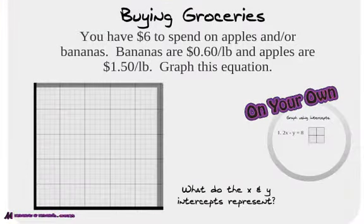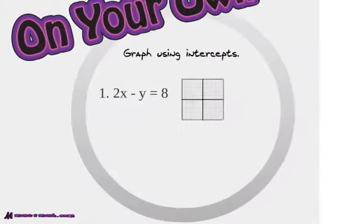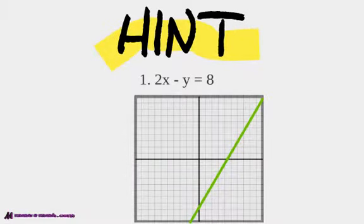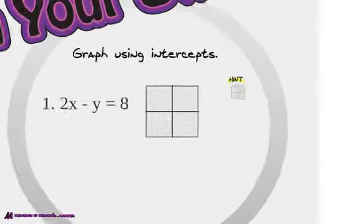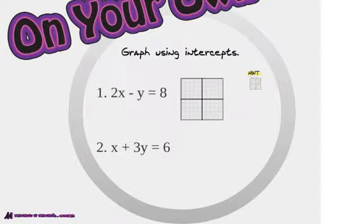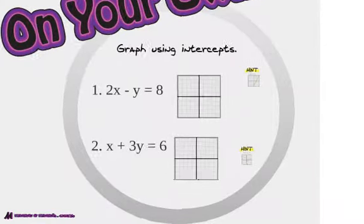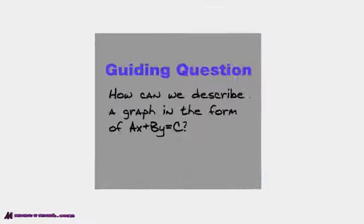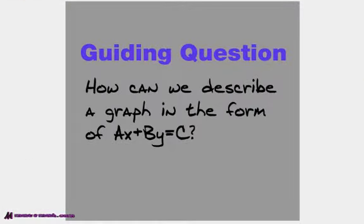That's why we use standard form — pretty cool idea. Now I want you to graph this using intercepts: 2x minus y equals 8. You should have something like this using the intercepts. And then x plus 3y equals 6 — why don't you graph this using intercepts as well? Are you able to describe a graph in the form of ax plus by equals c in standard form? I bet you can.